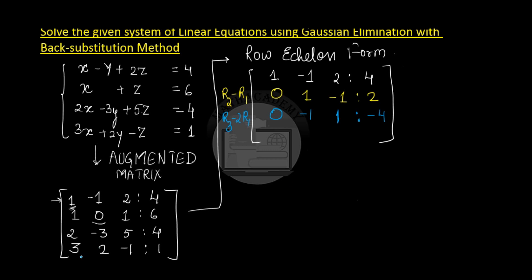And comes the 4th row. To make the first element 0, I will have to perform the operation row 4 minus 3 times row 1. So I get a 0 as the first element, and I get 5 as the second element, then minus 7, and then minus 11.